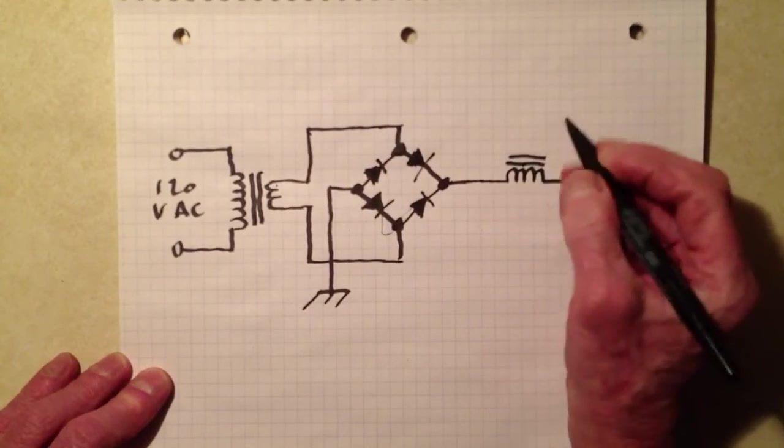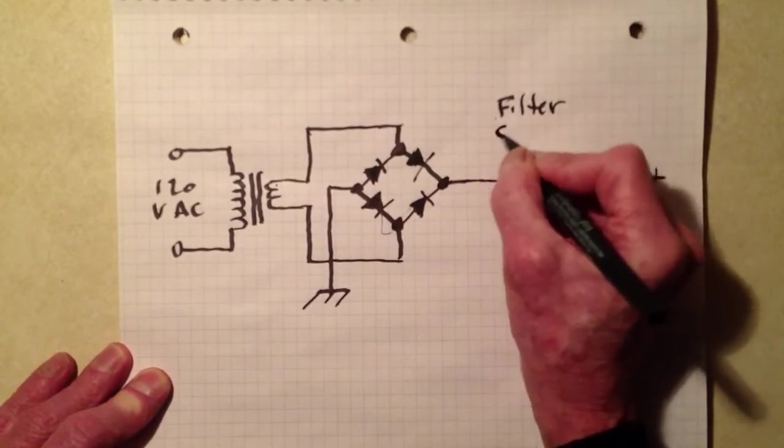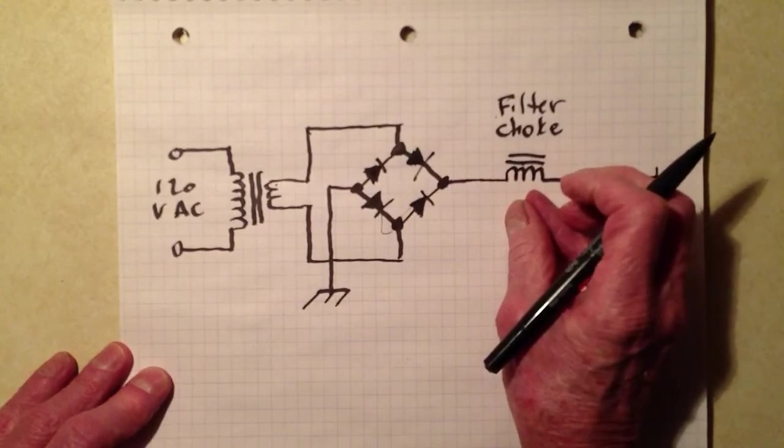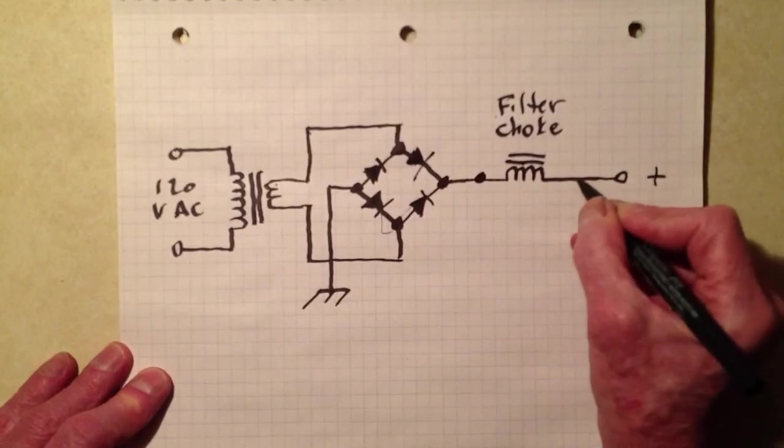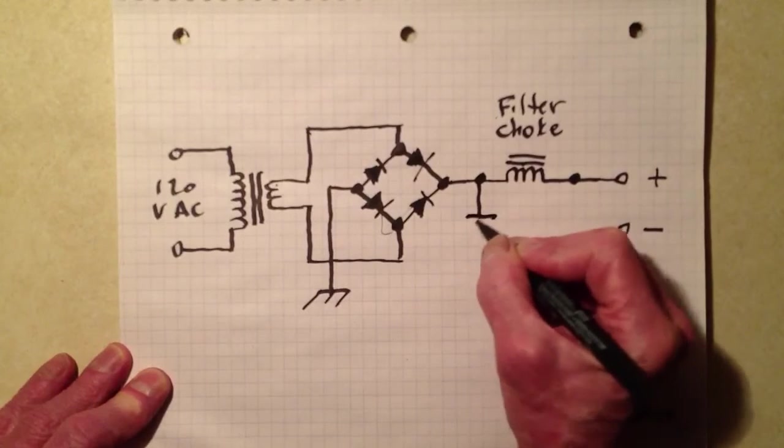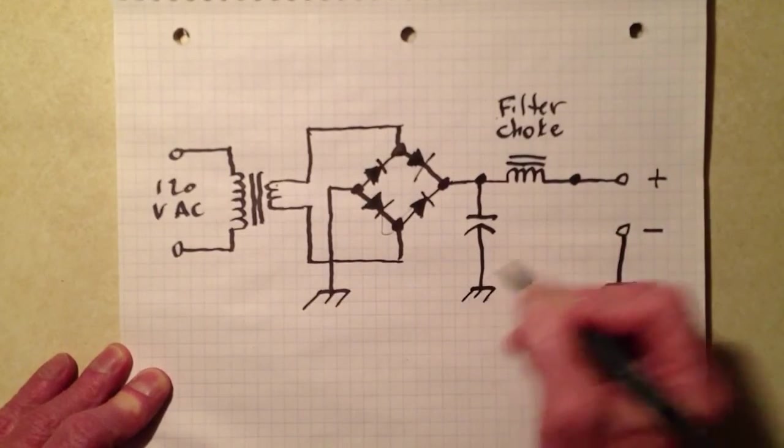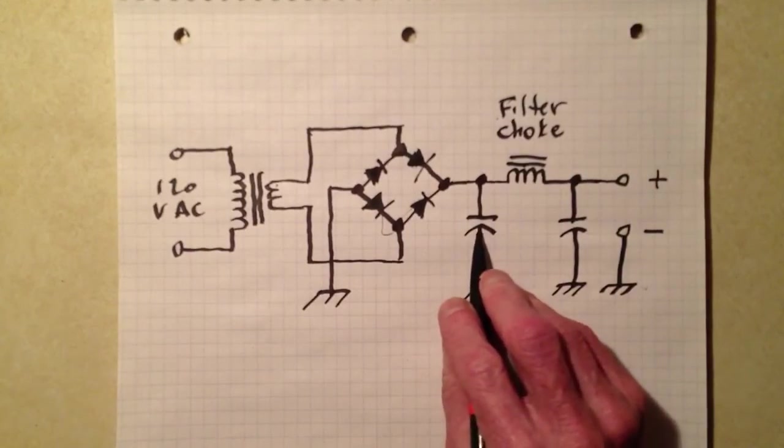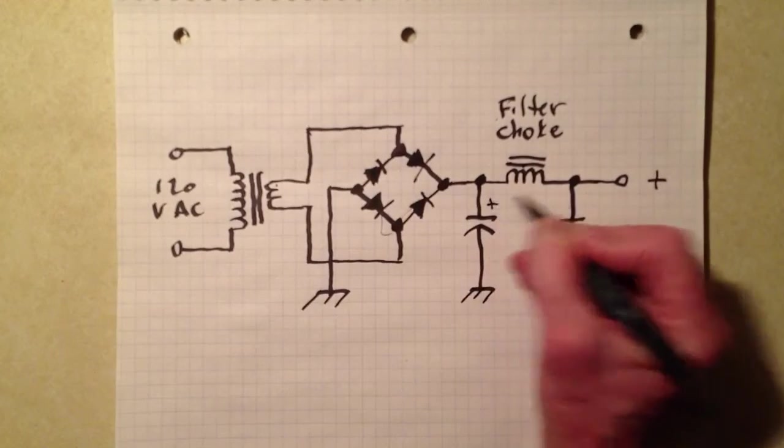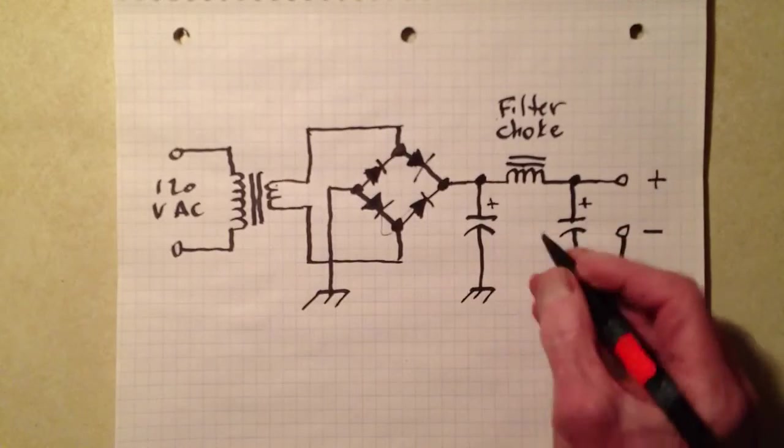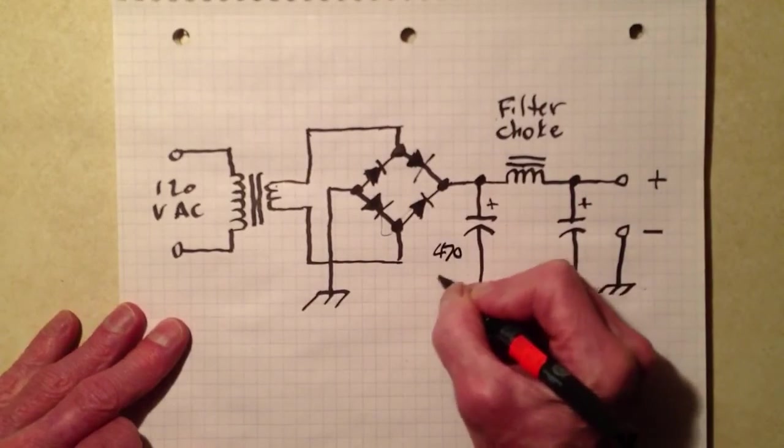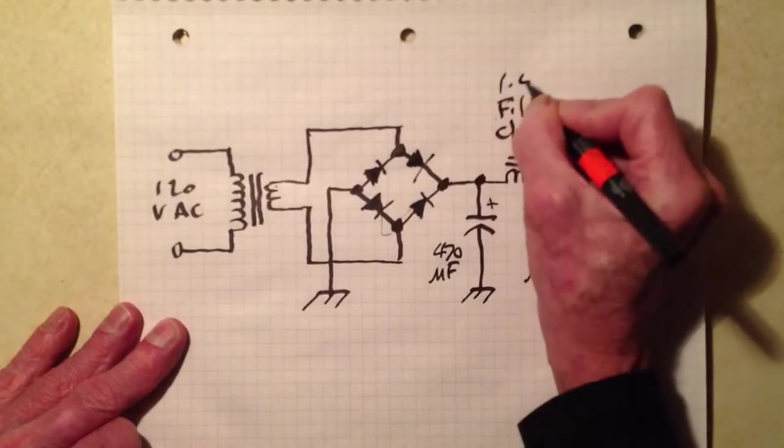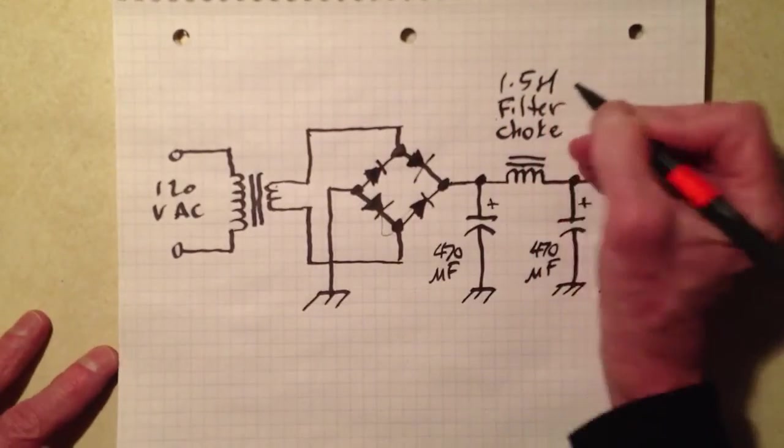That is a filter choke. Very large value inductor, probably on the order of one henry, maybe even more than that. Then we have a couple of electrolytic capacitors of high value, hundreds of microfarads, most likely. Note the polarities. You've got to connect these things up right. And when you have, let's just say they're 470 microfarads each. And let's say this is a 1.5 henry filter choke.